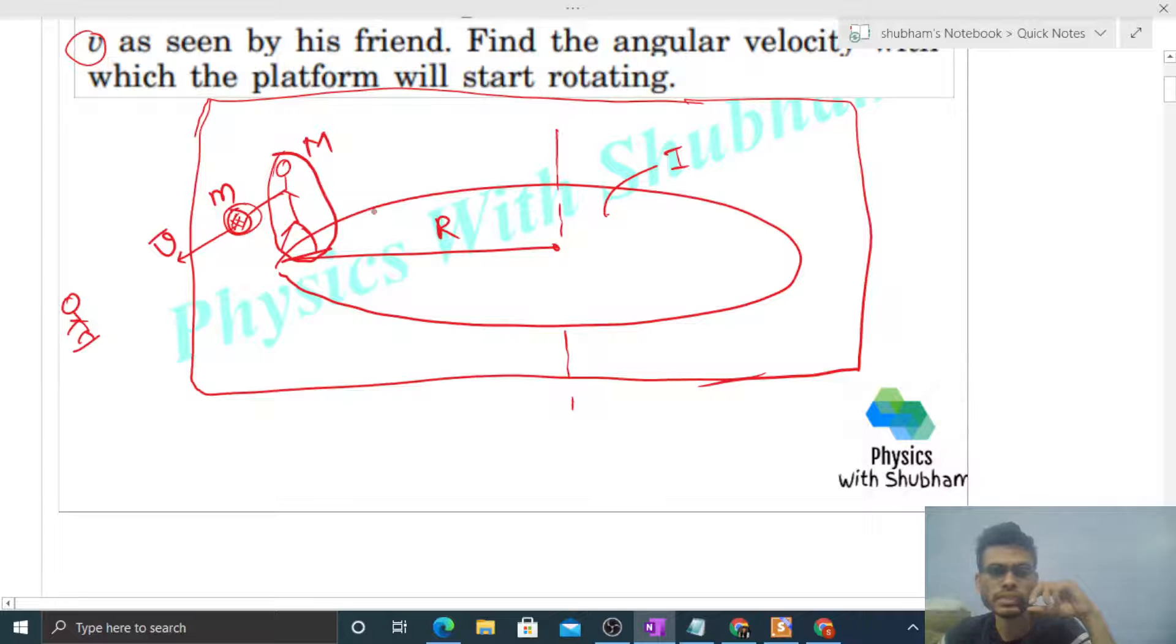For this system, these forces are internal forces, so the torque that will act will also be internal torque about this axis. Is there any external force or any external torque acting on the system? No, there is no external torque acting on the system.